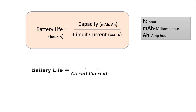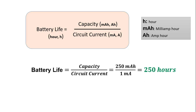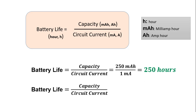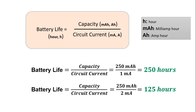For example, if a current of 1 milliamp is drawn from a 250 milliamp hour capacity battery, this battery's life will be 250 hours. If the current drawn is 2 milliamps, the life will be 125 hours.